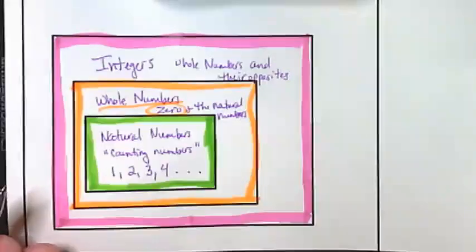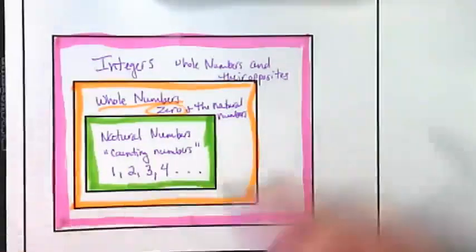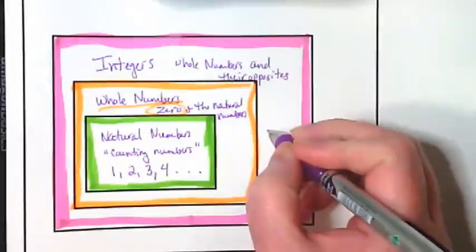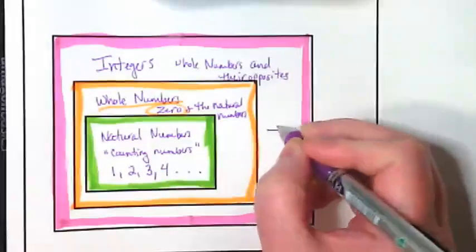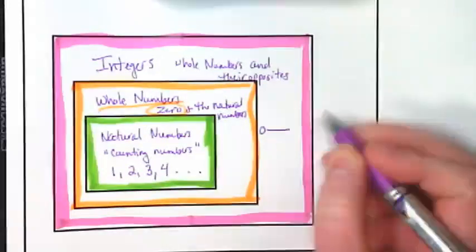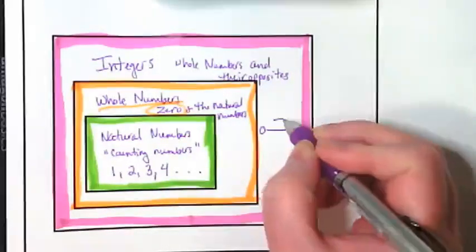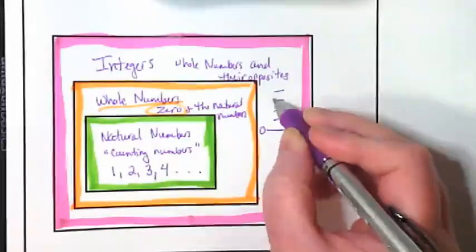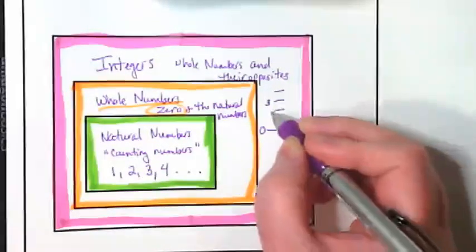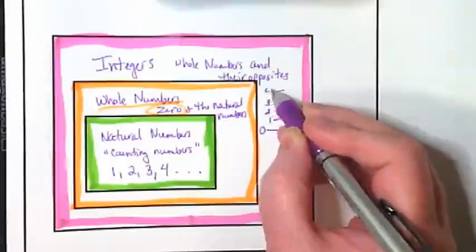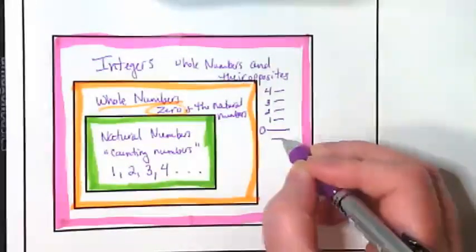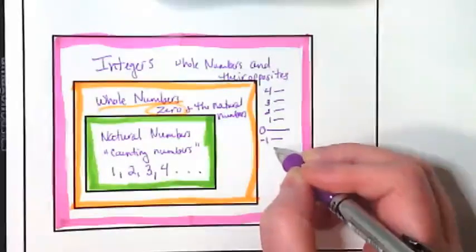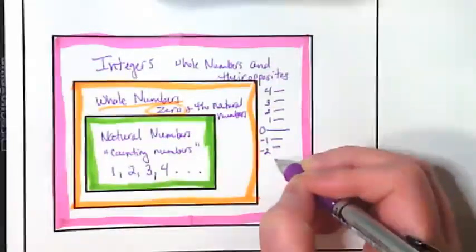When I think of the integers as a unit, I think of a number line. Number lines tend to have zero in the middle, and they tend to go up by positive numbers.